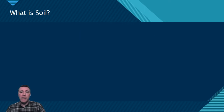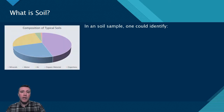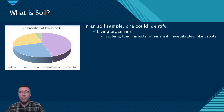Before we explore the processes and mechanisms that produce soil, let's first answer the question: what is it? Soil is an aggregate of five components. In any given soil sample, you would find living things, organic material, water, air, and minerals. Living things make up the tiniest fraction of soil. In it, we would find microorganisms like bacteria, including those that convert nitrogen gas into usable forms for plants. We would also find numerous small invertebrates, insects, and the roots of plants.